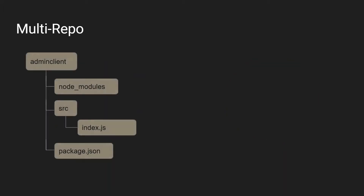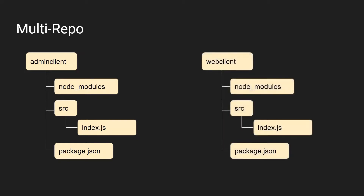In a multi repo, the admin client package has its own node_modules, source folder for development work, and its own package.json for dependencies. Similarly, the web client package has its own node_modules, source folder, and its own package.json. These are separate repositories — that's why it's called multi repo — and both packages have their own node_modules with no sharing of dependencies.